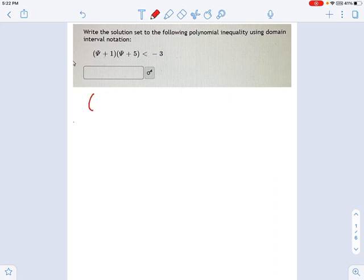The way we're going to do this is we're going to turn it into this. We're going to say psi plus one times psi plus five plus three is less than zero.